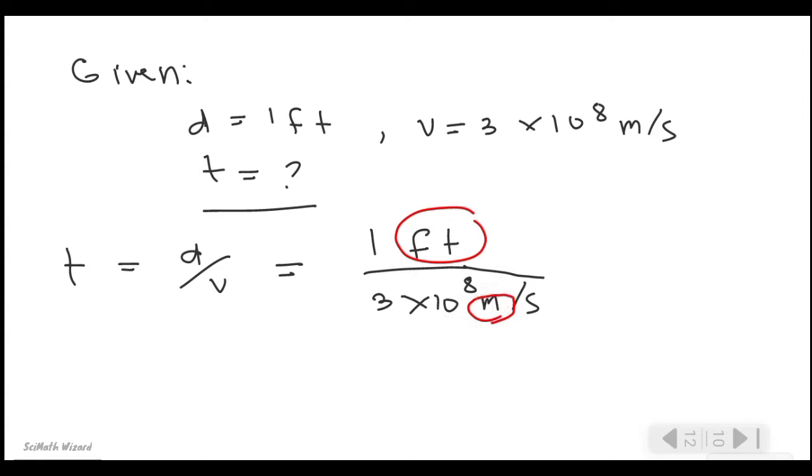And to cancel out the meter, we should convert the one foot into meters. And we know that one foot is equal to 0.3048 meters. And from that we can now cancel out the unit which is the meter.